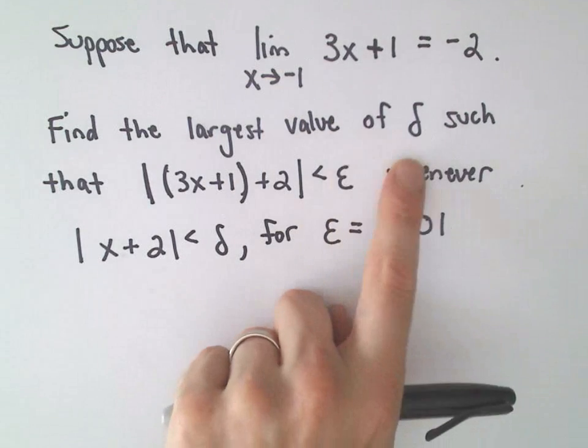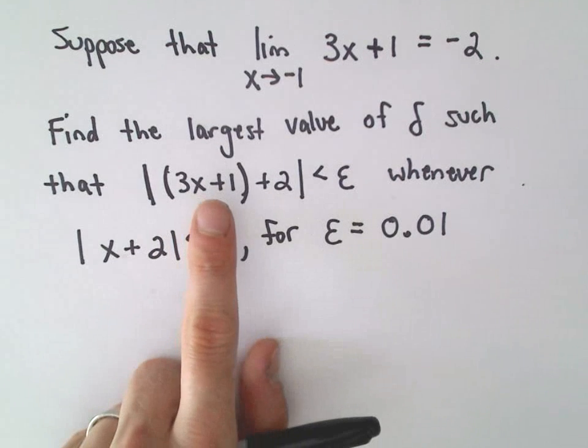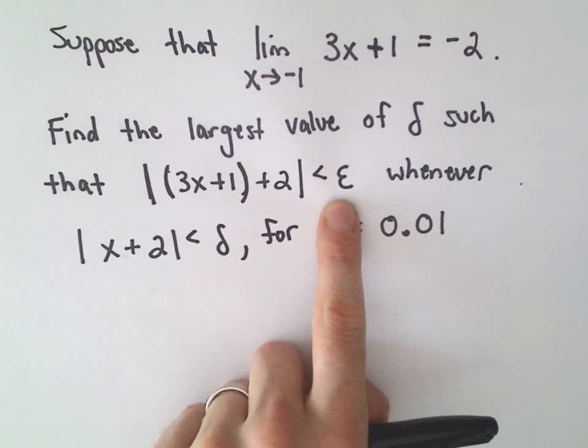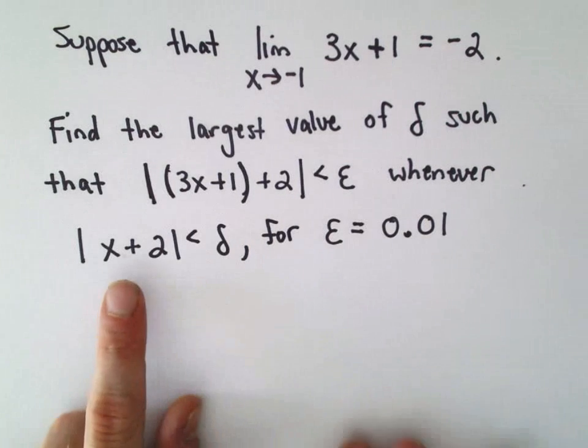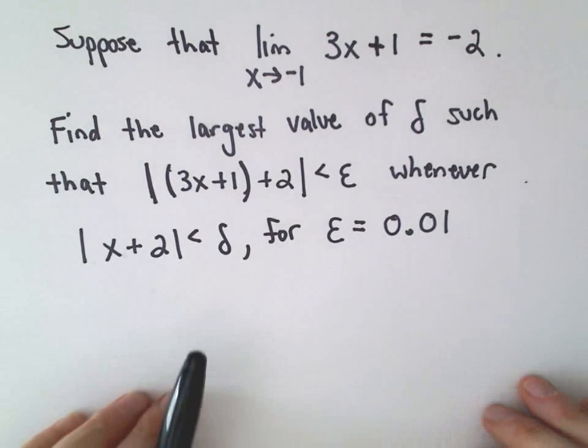And what we want to do is we want to find the largest value of delta so that the quantity 3x plus 1 plus 2 is going to be less than epsilon whenever x plus 2 is less than delta and epsilon equals 0.01.